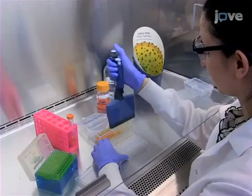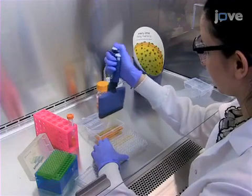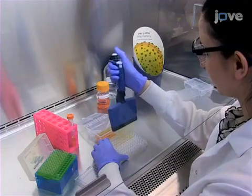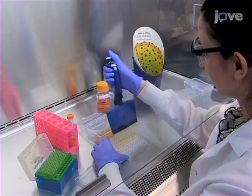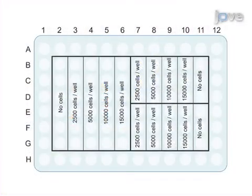To begin, harvest and replate cells in 100 or 200 microliters of media at varying cell densities in a 96-well plate as described in the accompanying protocol. Fill the surrounding wells with 200 microliters of sterile water to reduce edge evaporation effects.